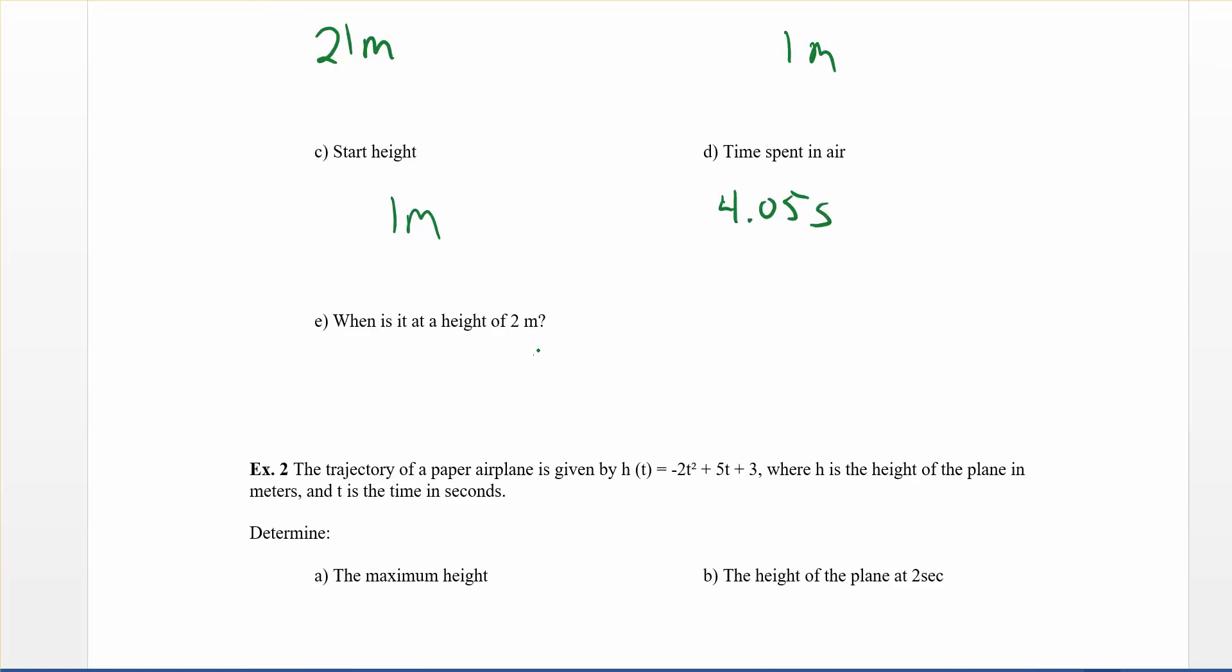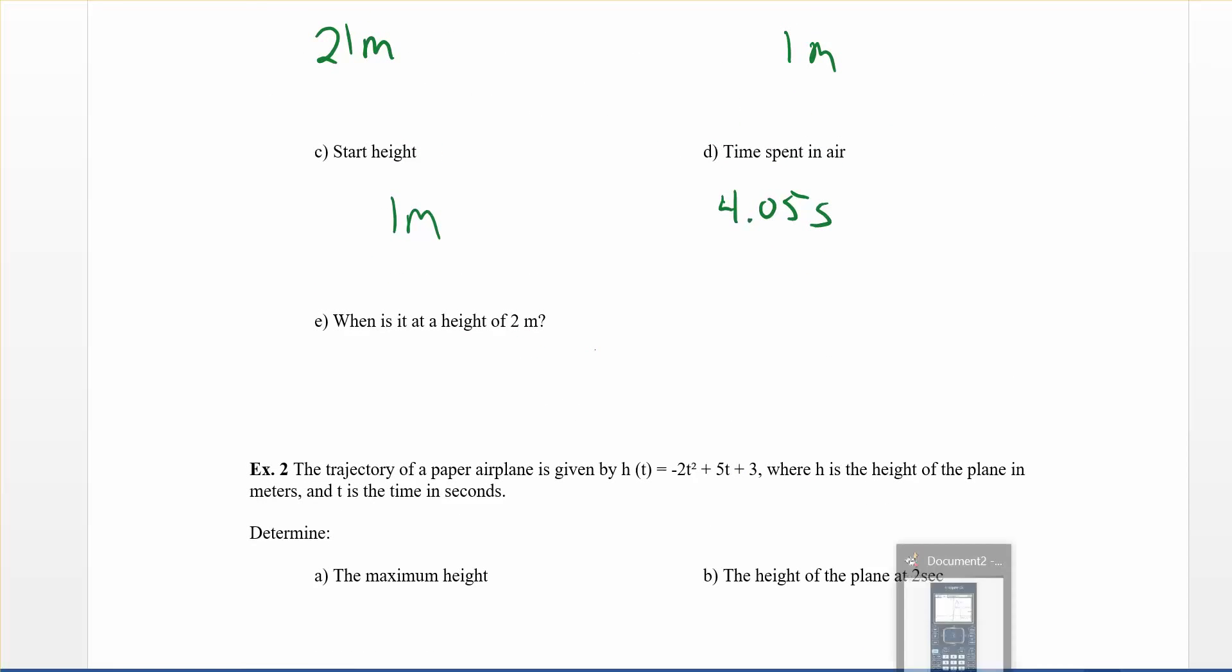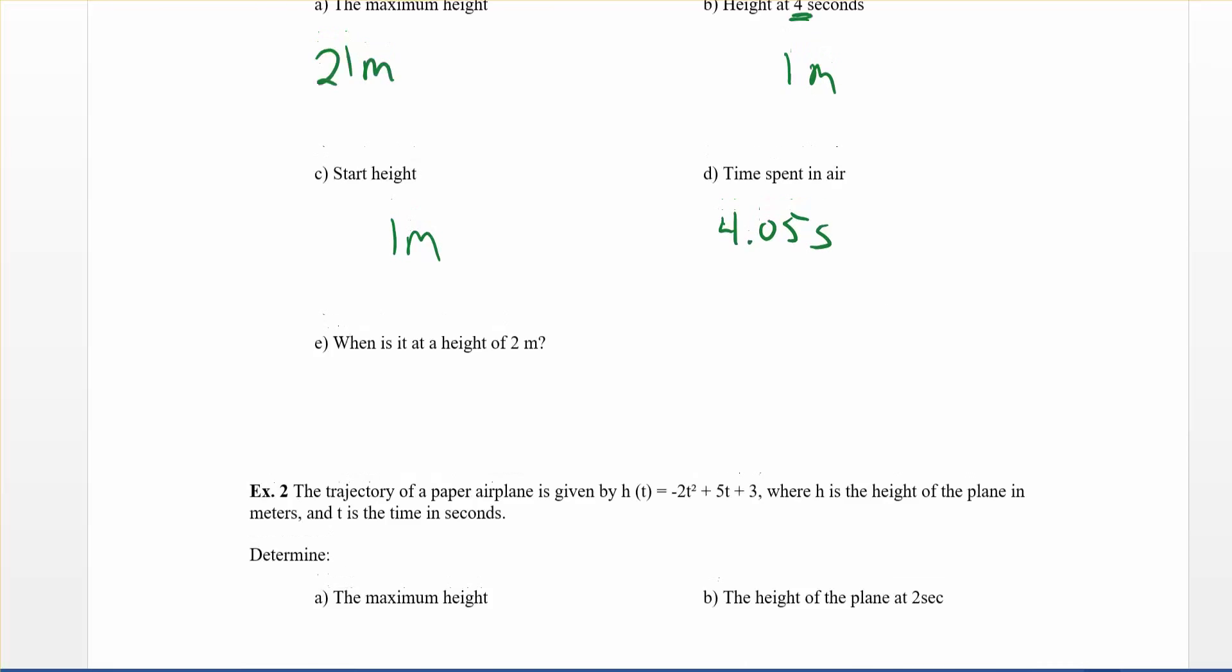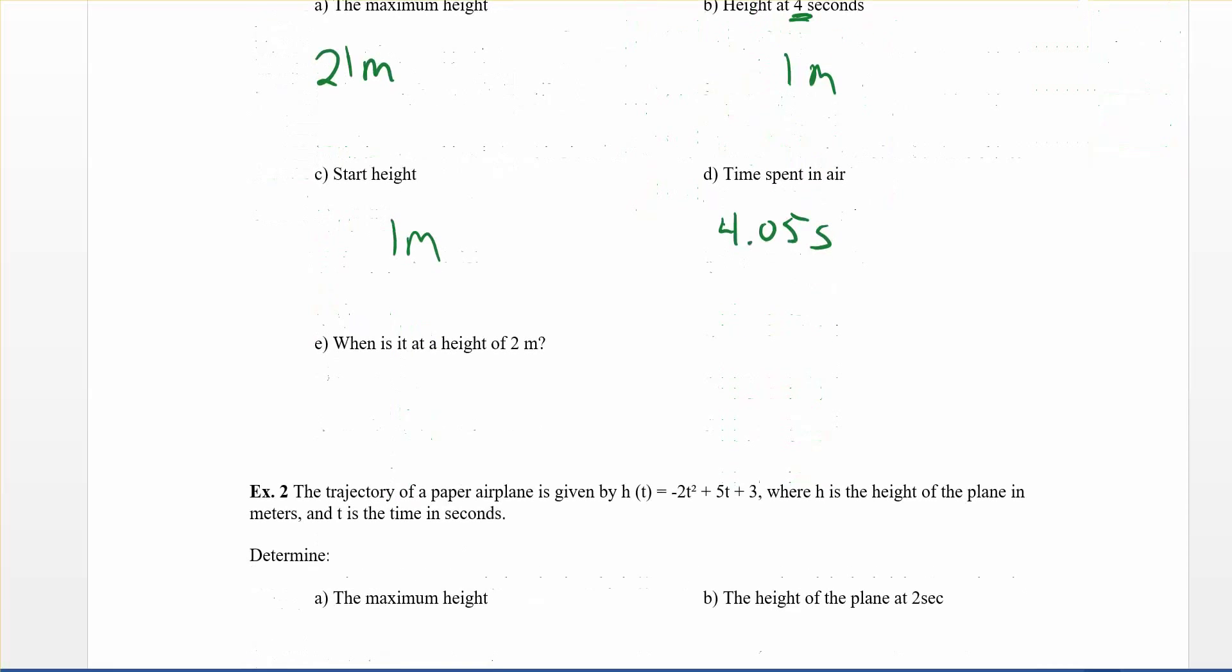When is it at a height of two meters? Well, we've done that kind of thing already, right? All you have to do is go menu, trace, trace graph. And now just tell that little spider where to go. Two. It's at 21 at two, right? Which is the vertex. I kind of forgot about that. So also could have figured that out when you figured out the vertex point, right? So at two, so 21 meters.